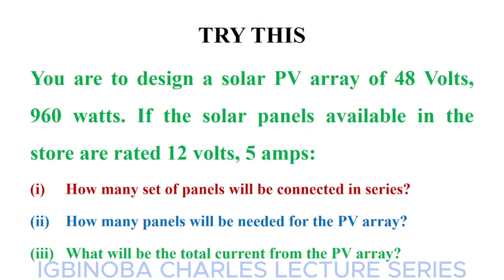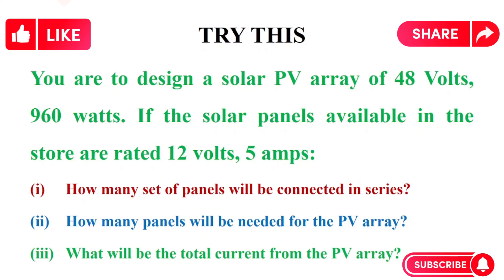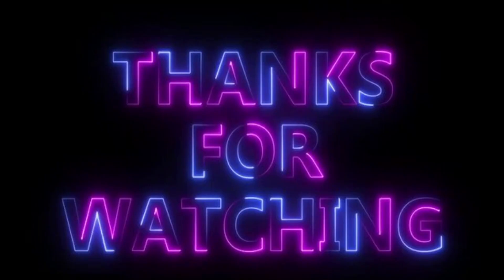You can try this question: design a solar panel PV array of 48 volts, 960 watts. The solar panels available are rated 12 volts, 5 amps. How many sets of panels will be connected in series? How many panels will be needed for the PV array? And what will be the total current from the PV array? Leave your answer in the comment section. If you find this video interesting, please like and share it with your friends and colleagues. Thanks for watching and stay tuned for more videos.